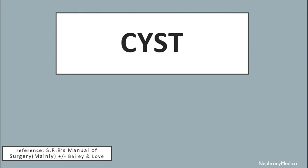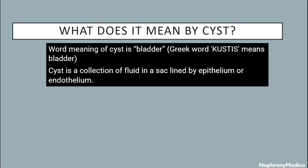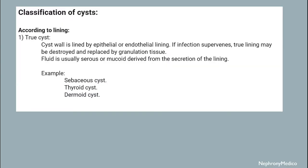Hello and welcome. Let's talk about cysts. What does the word 'cyst' mean? The word meaning of cyst is bladder. A cyst is a collection of fluid in a sac lined by epithelium or endothelium. Classification of cysts follows.